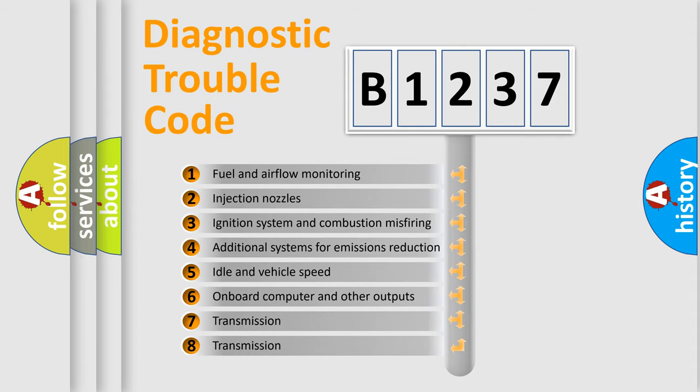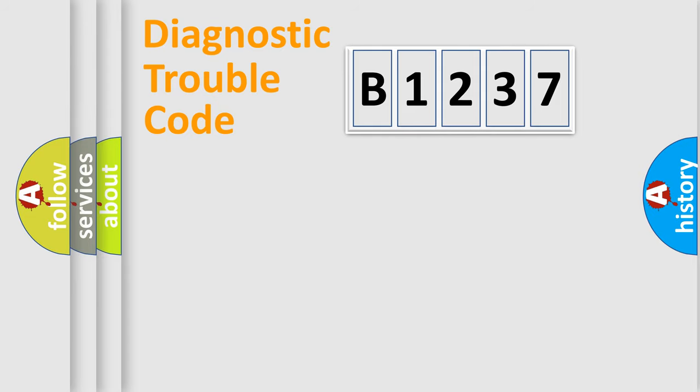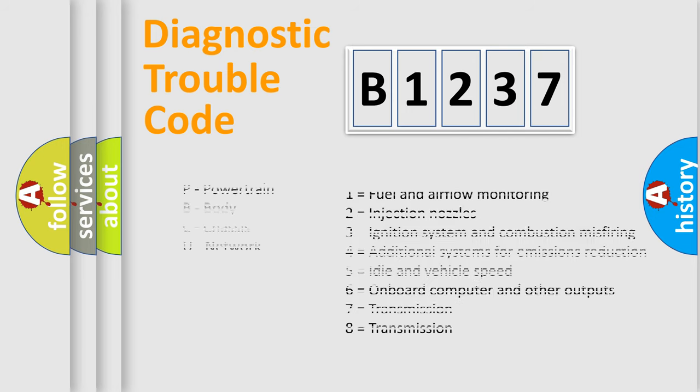The third character specifies a subset of errors. The distribution shown is valid only for the standardized DTC code. Only the last two characters define the specific fault of the group.